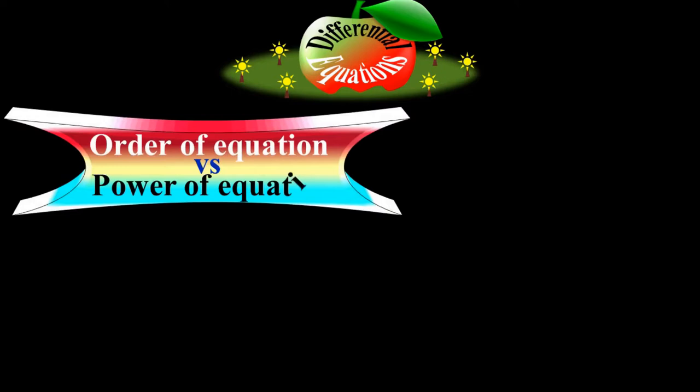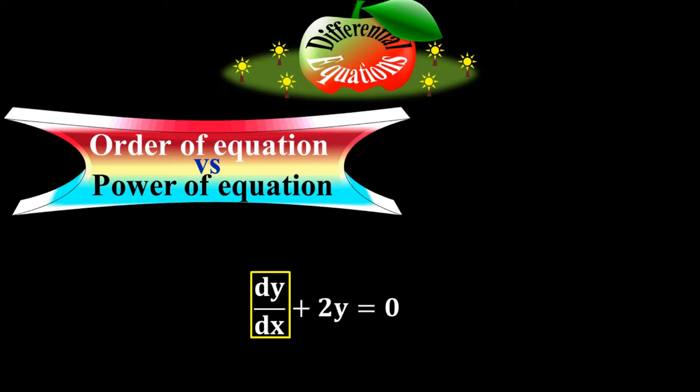What is the difference between the order and power of a differential equation? For the equation dy/dx + 2y = 0, the order is the number of the highest derivative term. The maximum derivative here is dy/dx, which is the first derivative, so this is a first-order differential equation. Power is the power of the highest derivative term.